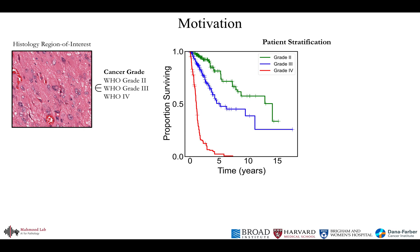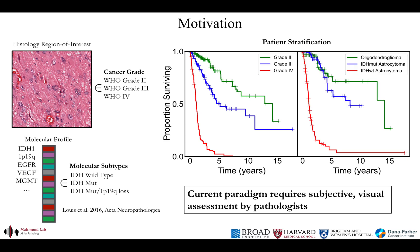The current standard of care for cancer prognosis is the subjective and qualitative analysis of histology images. For cancers such as glioma, the abnormal manifestation of glial cells are used to define histologic grades, which are then used to stratify patients into relevant treatment groups, with molecular profiles used now as a mainstay according to the WHO paradigm. Histology images, however, suffer from large intra-observer variability amongst pathologists, and for many cancers, there is unexplained variance as to why some cancers will recur, or why patients with similar pathology will have different outcomes.